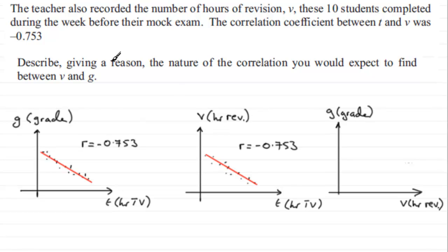But we've got to describe, giving a reason, the nature of the correlation you would expect to find between V and G, between the hours of revision and the grade that you get. Well, I would have thought, judging by this, we would expect that the more hours of revision that you put in, the higher the grade. So I'm expecting scatter diagram to look something like this, with our line of best fit going through like that.